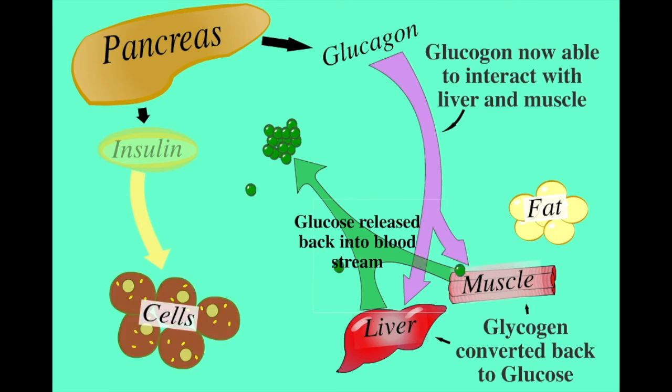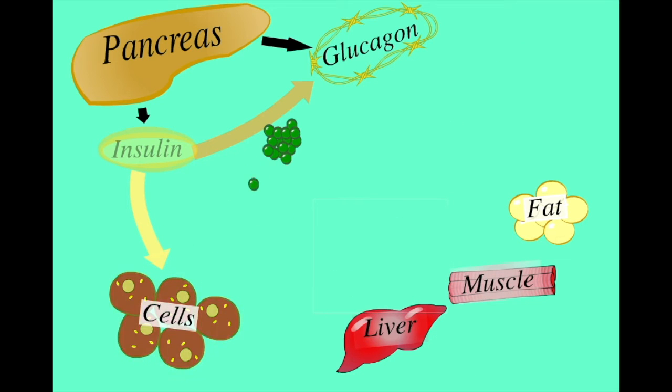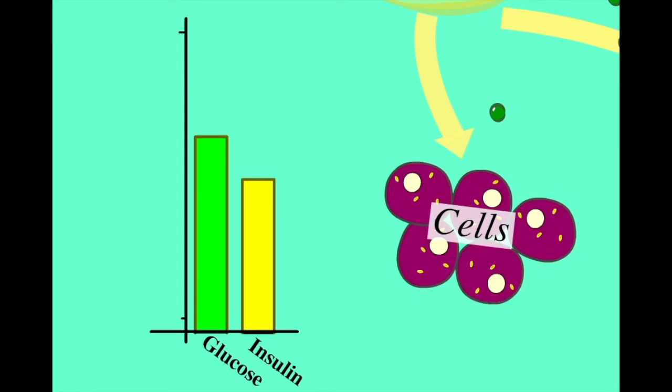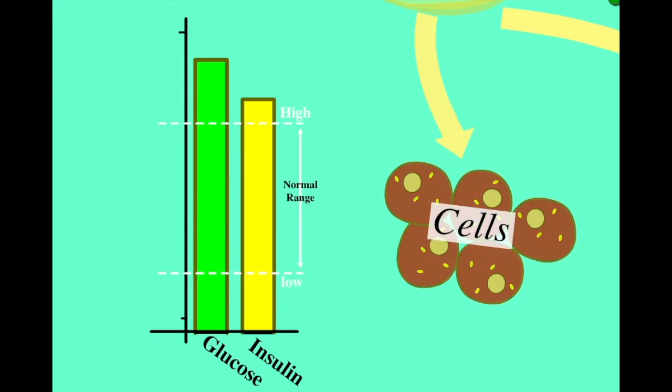This continuous cycle helps maintain blood sugar levels within safe parameters. Blood sugars are not allowed to become too low, depriving the body of its fuel supply, or too high, the consequences of which we will look at later in the video.